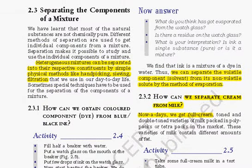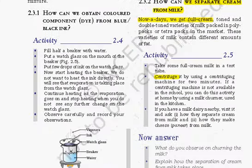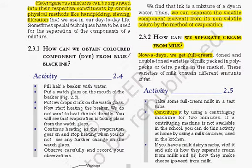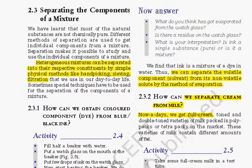To separate components of a mixture: if it is a heterogeneous mixture, it can be separated easily by hand-picking, sieving, or filtration — for example, filtering dirt from water. If it is a homogeneous mixture, various methods are required. One method is evaporation: if you boil the solution, evaporation causes the non-volatile component to separate from the volatile component. For example, if you take ink in water and boil it, the ink will get separated from water through evaporation.